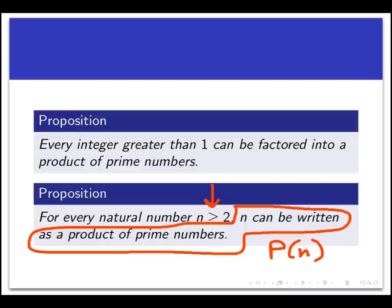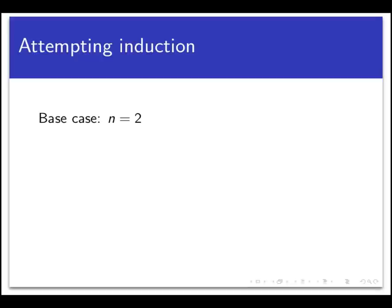So let's start a proof by induction, and we're going to see there's a bit of a problem in the inductive step. First, let's start the base case with n equals 2. Well, P of 2 is true because 2 itself is a prime number, and remember that we said a product, quote unquote, can mean just a single prime by itself. So the base case is established.